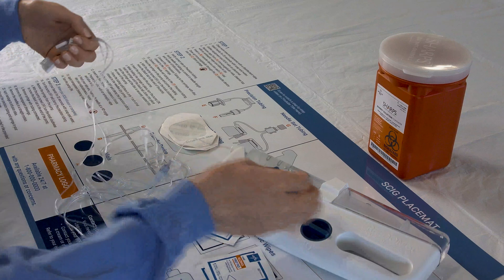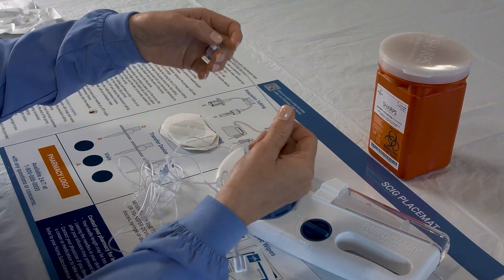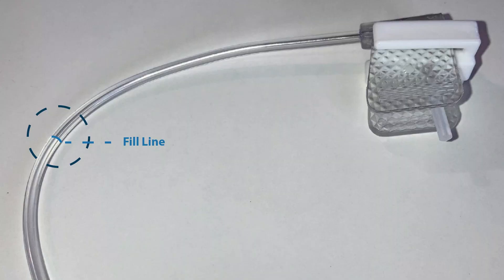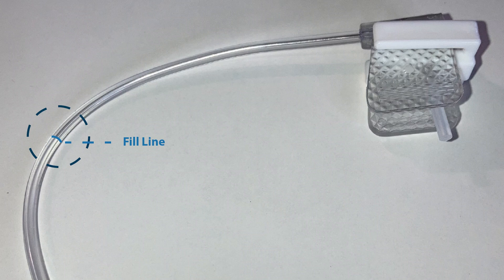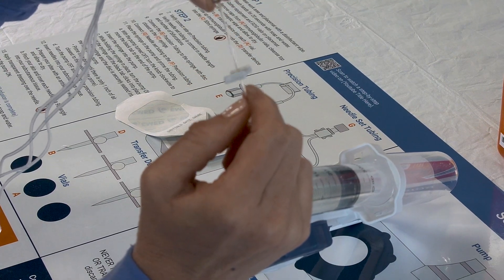The black tab will push the plunger of the syringe to prime the tubing with medication. Dry priming is recommended to avoid site irritation. Closely watch the tubing to not prime to the needle, leaving one inch of air in the tubing closest to the needles. Once the pump is primed, clamp the precision tubing, then turn the pump off.